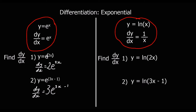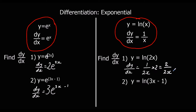The same approach applies to our ln functions. dy/dx is 1 over whatever's in the bracket — so 1 over 2x in this case — and then times by the bracket differentiated, which is 2. So we get 2 over 2x, which simplifies to 1 over x.